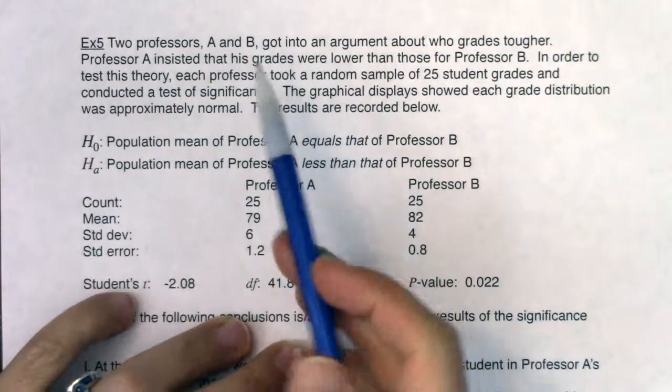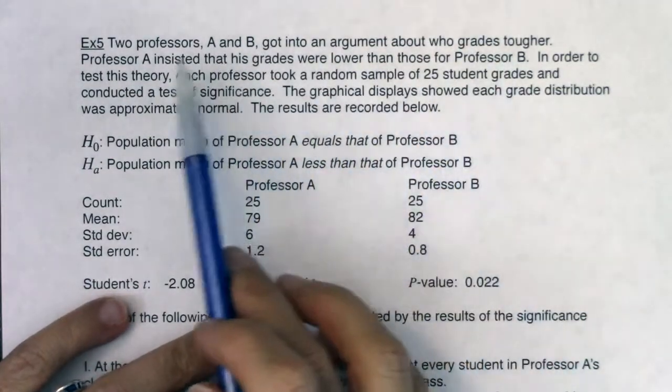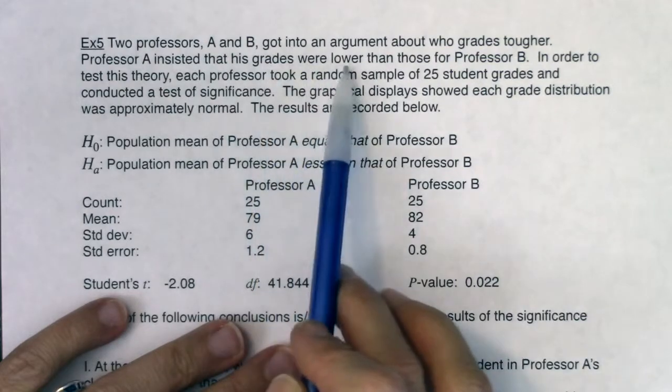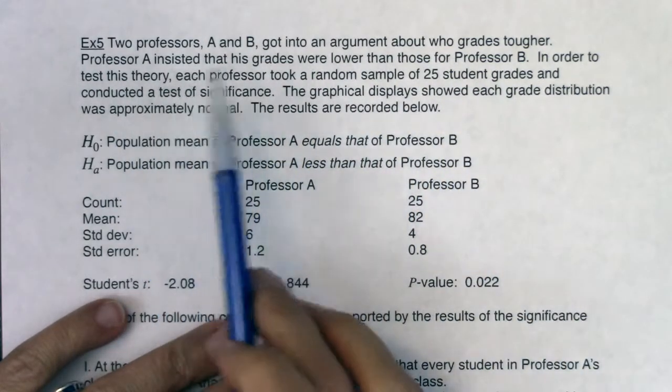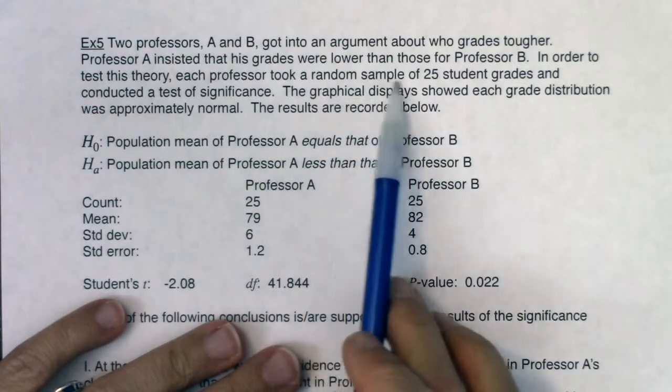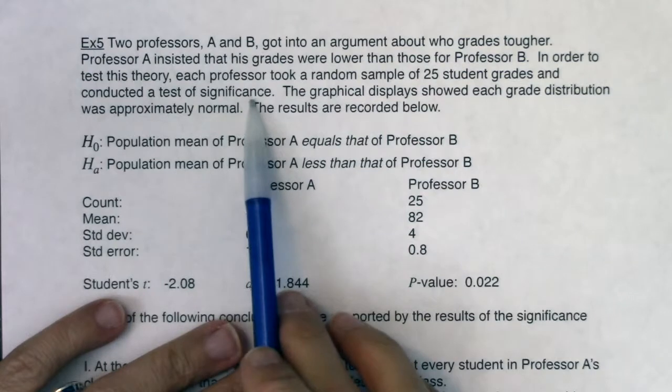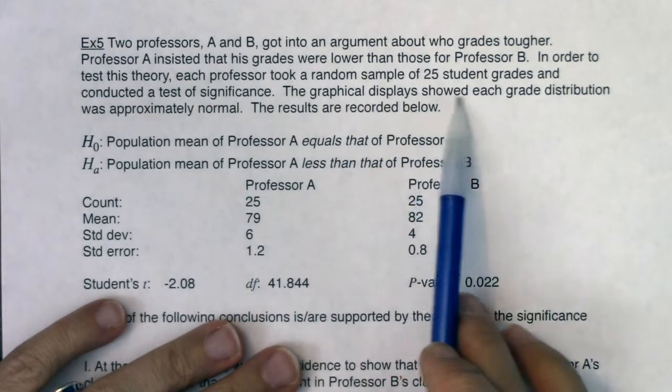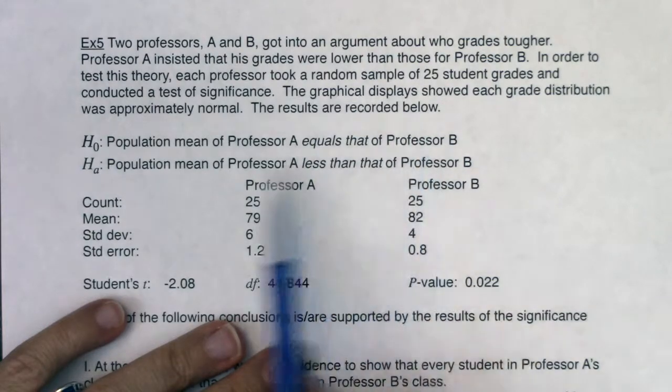Okay, two professors A and B got into an argument about who grades tougher. Professor A insisted that his grades were lower than those for Professor B. In order to test this theory, each professor took a random sample of 25 student grades and conducted a test of significance. The graphical displays show that each grade distribution was approximately normal. The results are recorded below.